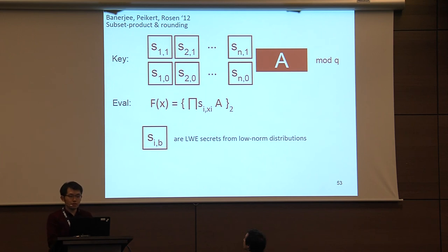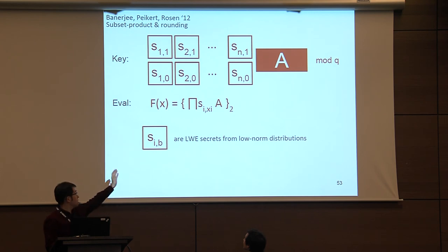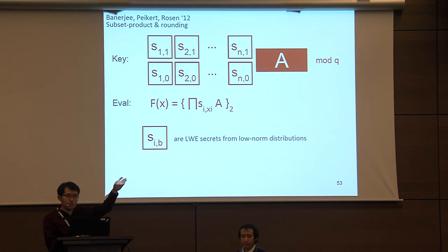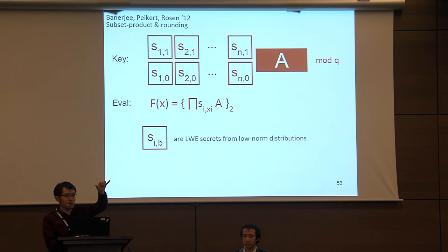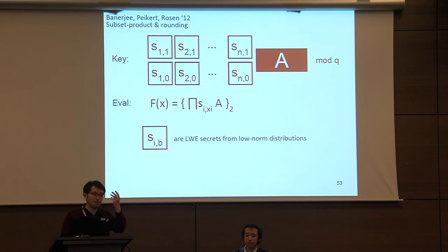The original PRF constructed by Banerjee et al.: for a lattice-based PRF, you pick many matrices from the correct LWE secrets distribution, do a subset product — the input selects which product to take — multiply them together with an LWE masking matrix A, then run the rounding step. You get an LWE security argument and can inject noise for free and on the fly.